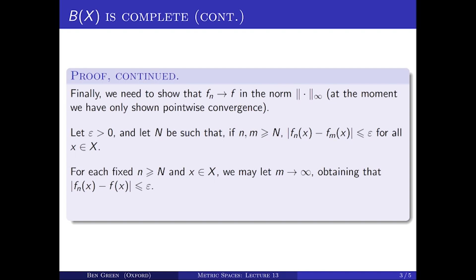Now, fix a value of little n and a point x. For each such fixed choice, I can take the limit as m tends to infinity. Because the limit as m tends to infinity of Fm(x) is equal to F(x), what this tells me is that the absolute value of Fn(x) minus F(x) is less than or equal to epsilon, uniformly for all x in the set big X, and for every value of little n greater than or equal to capital N. So in other words, for every little n greater than or equal to capital N, the sup-norm of Fn minus F is less than or equal to epsilon. And epsilon here was arbitrary, so this is exactly what it means for Fn to tend to F in the sup-norm.